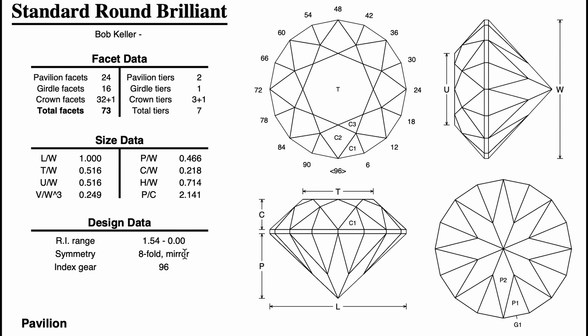Let's take the standard round brilliant. 57 facets seen the world over in everything from diamonds to sapphires to quartz and whatever. It's the design many people learn to facet with. Because the angles are a constant, their relative positions are predictable and therefore calculable.